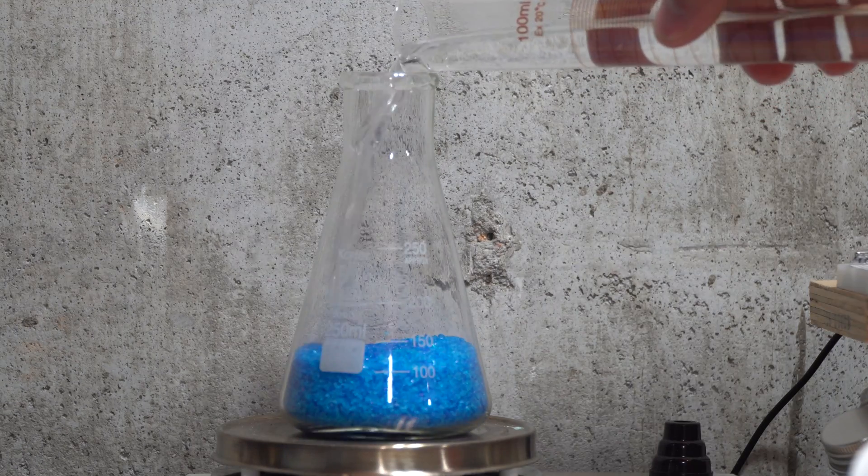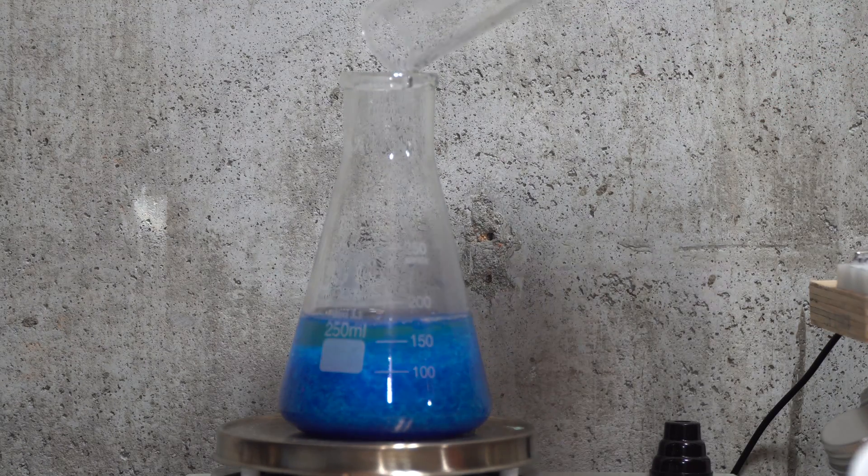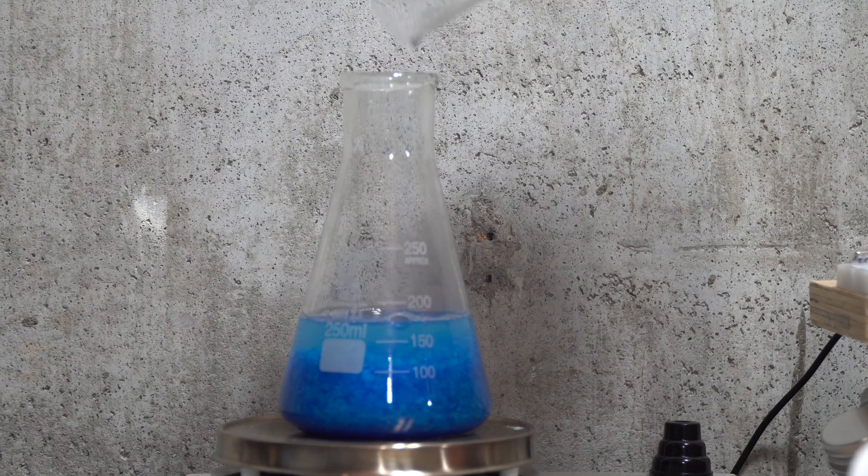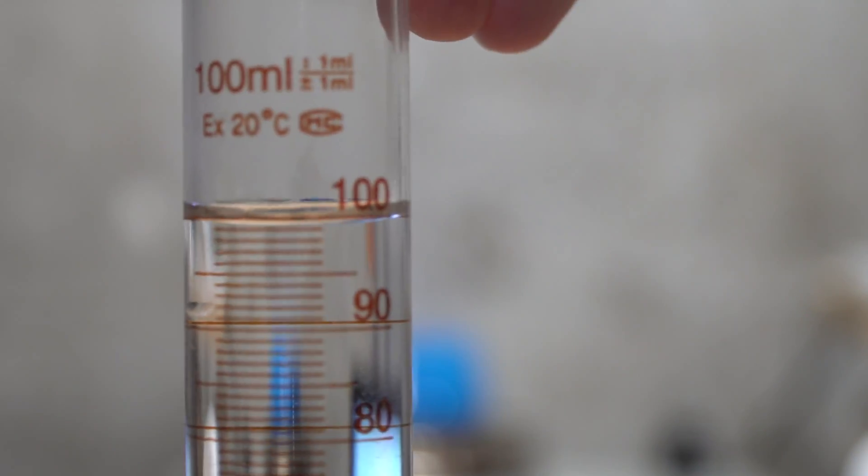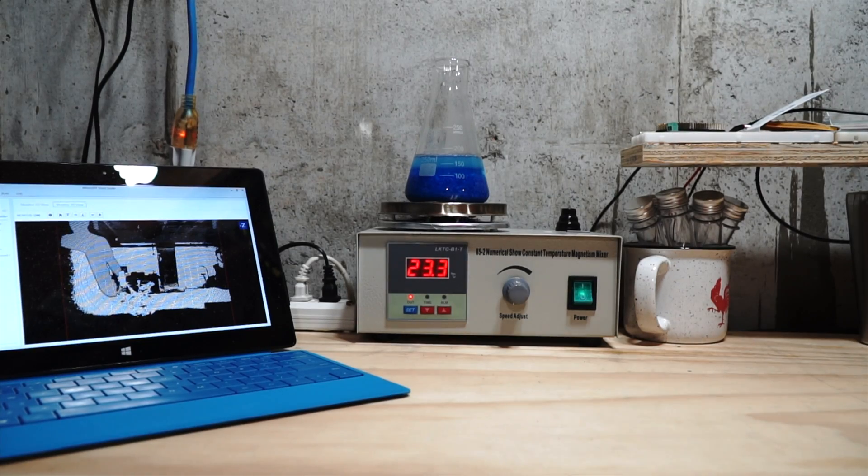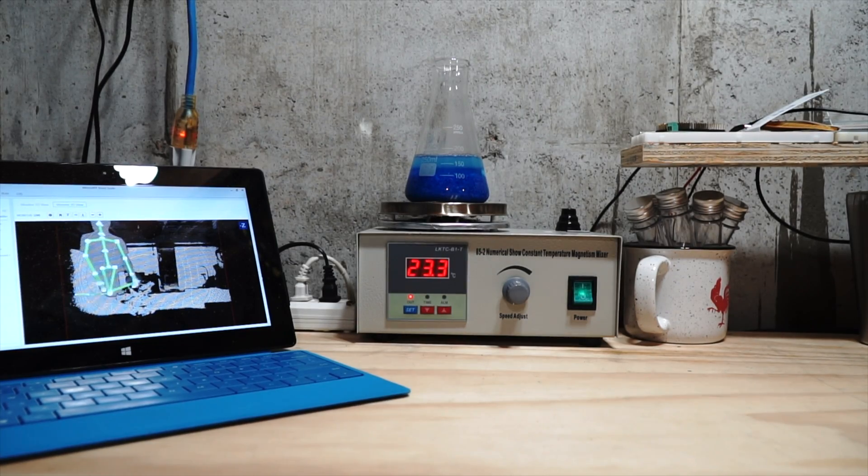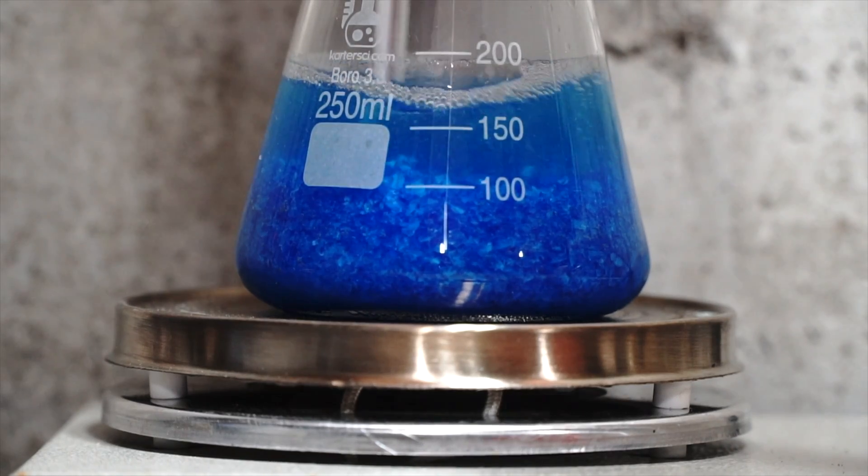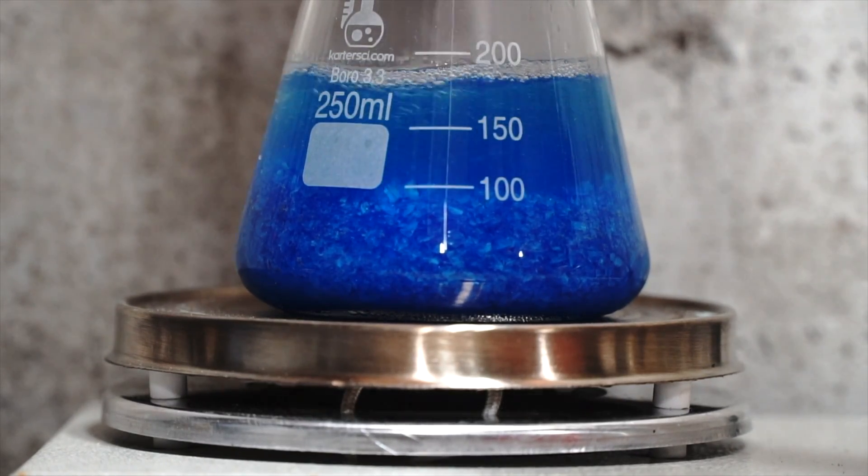Alright, here we go. Right here I'm adding about 100 milliliters of water to about 160 grams of copper sulfate crystals, or regular store-bought root be gone. At boiling, 100 milliliters of water should dissolve about 74 grams of copper sulfate, so in total I'll use about 200 milliliters.